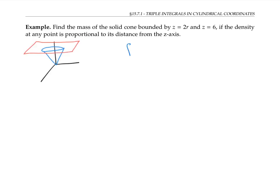And we know that we can find mass by taking the triple integral of density. Density is proportional to the distance from the z-axis. So that means it's some constant, I'll call it k, times distance from the z-axis. Distance from the z-axis is the square root of x² + y².